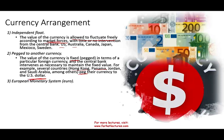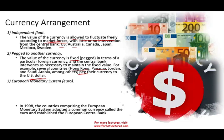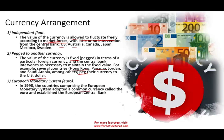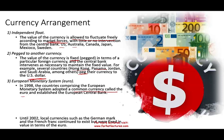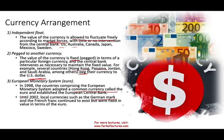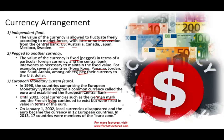Some systems, like the EU, use a European monetary system. In 1998, countries comprising the EU adopted a common currency called the euro and established a European Central Bank. Up until 2002, local currencies such as the German mark and French franc continued to exist but were fixed in terms of the euro. On January 1st, 2002, local currencies disappeared and the euro became effective in 12 European countries. By 2013, 17 countries were members of the eurozone. The value of the euro now fluctuates against the US dollar and other currencies.